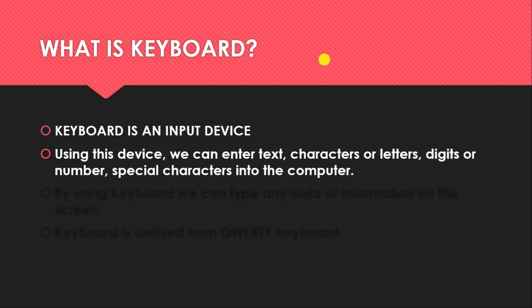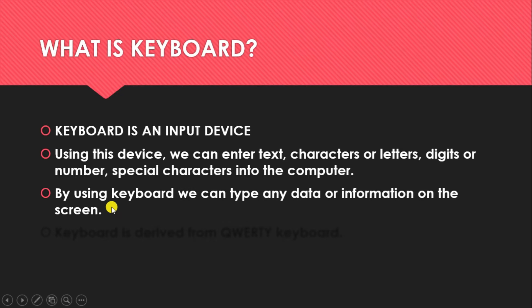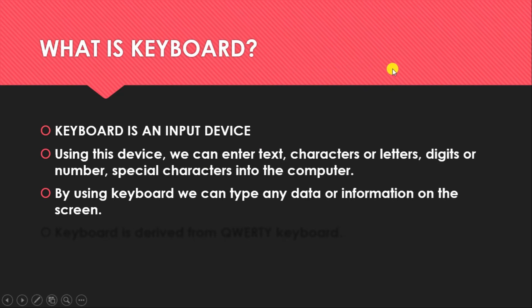It can be the at-the-rate symbol, or numbers like 5, 7, 9, and many more. By using the keyboard we can type data and information on the screen. The screen is the monitor where you will see all the information displayed — whatever you are typing will appear on the screen.